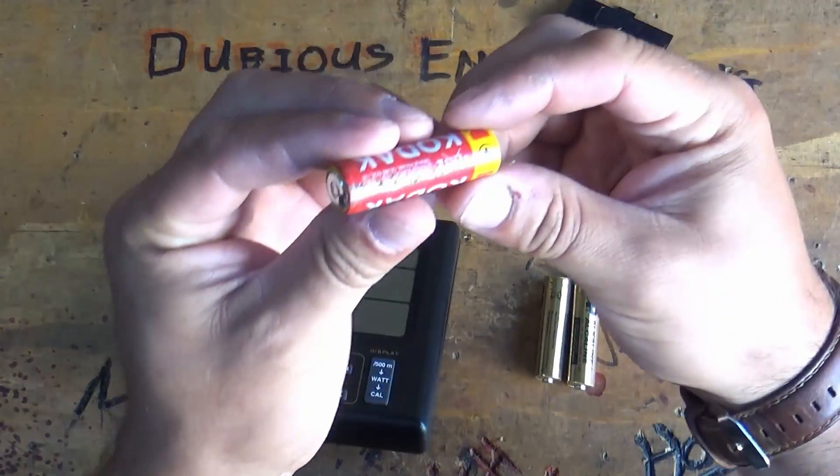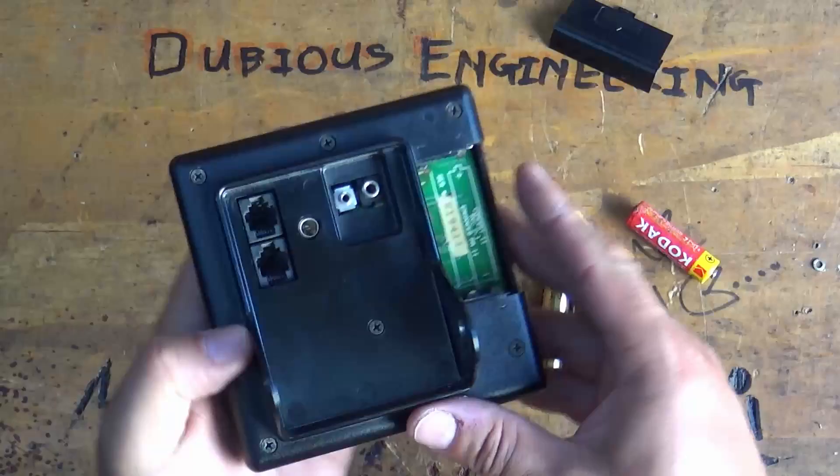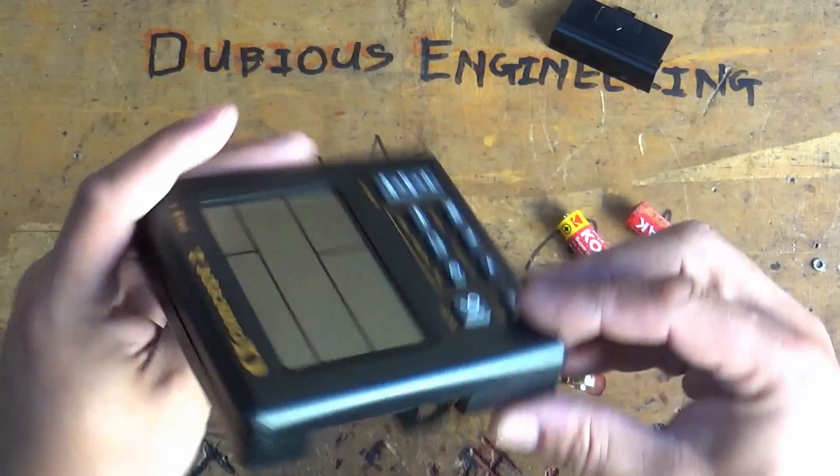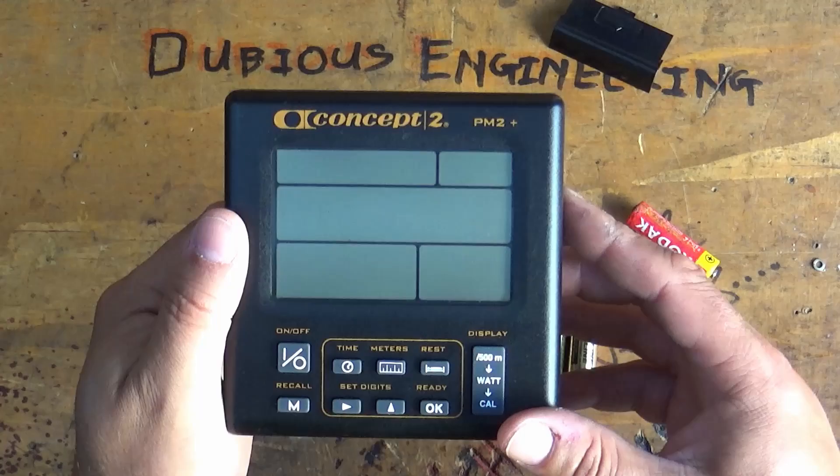Ladies and gents, leaking batteries like this can easily damage your electronics equipment and indeed it has. It's damaged this Concept2 rowing machine computer.